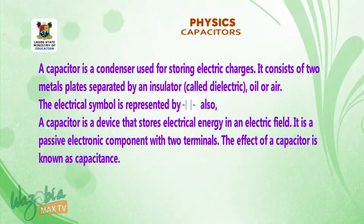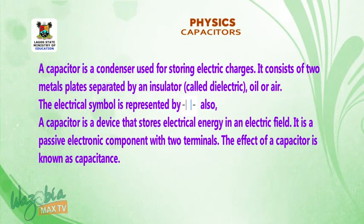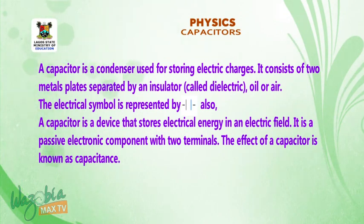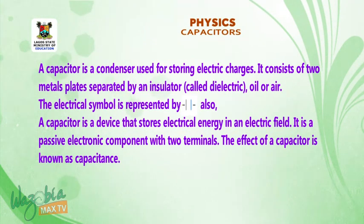A capacitor is a condenser used for storing electric charges. It consists of two metal plates separated by an insulator called dielectrics. The electrical symbol is shown above. Also, a capacitor can be defined as a device that stores electrical energy in an electric field. It is a passive electronic component with two terminals. The effect of a capacitor is known as capacitance.